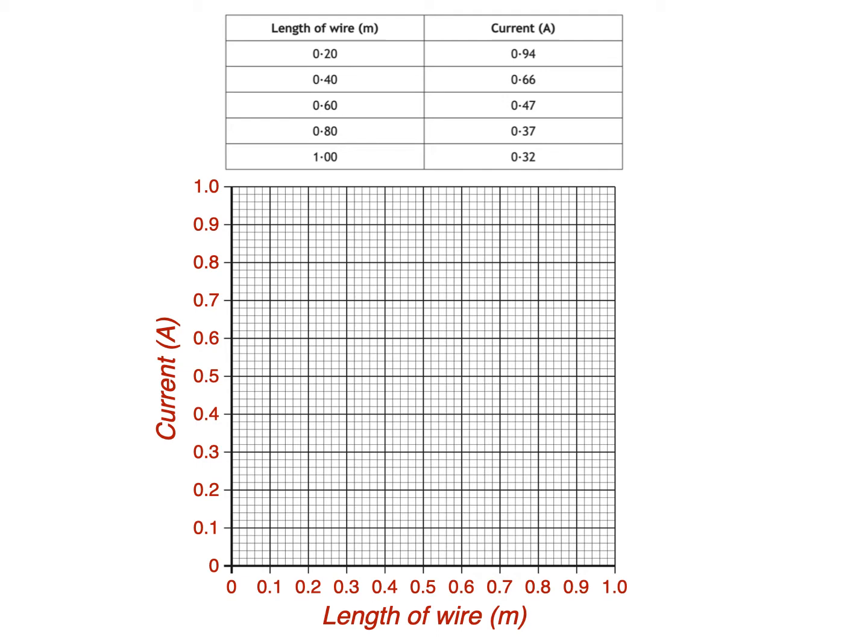You should see that each minor division or little box on the y-axis represents 0.02 amps which is one-fifth of 0.1, since each major division is divided into five minor divisions. So here's the first point, the second, third, fourth and final point.